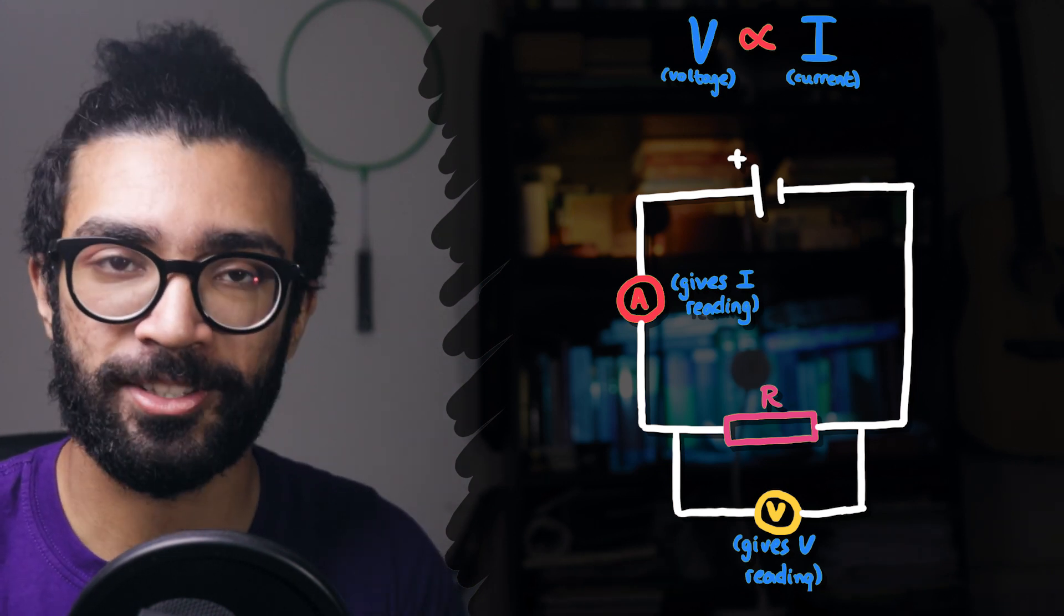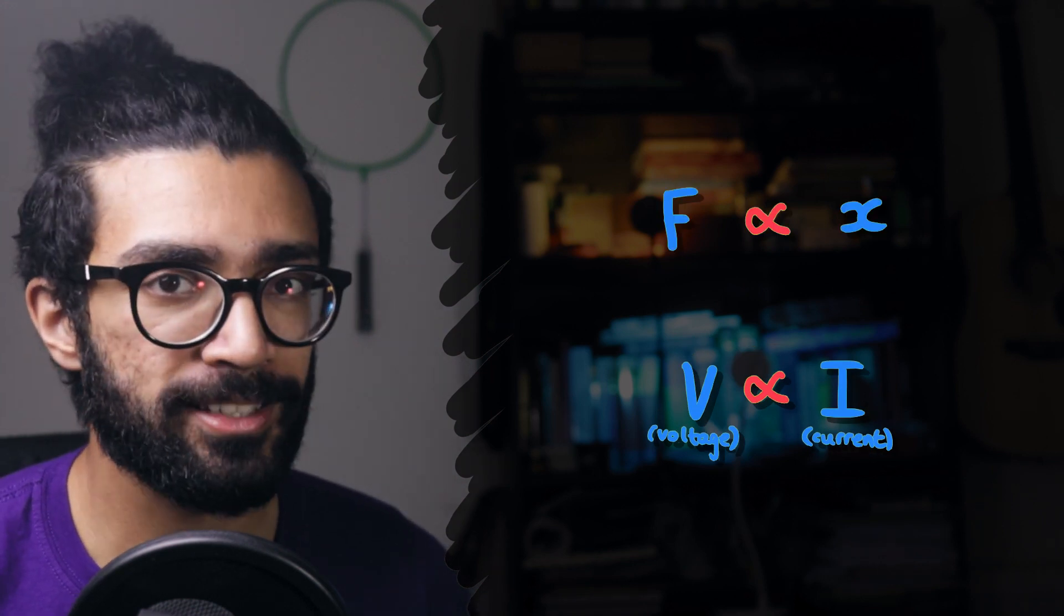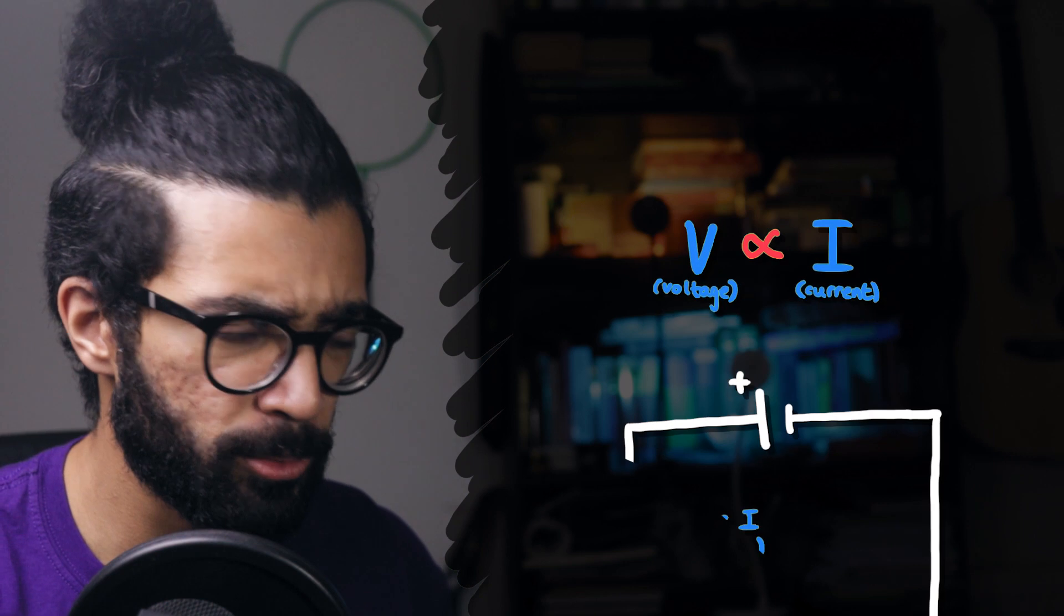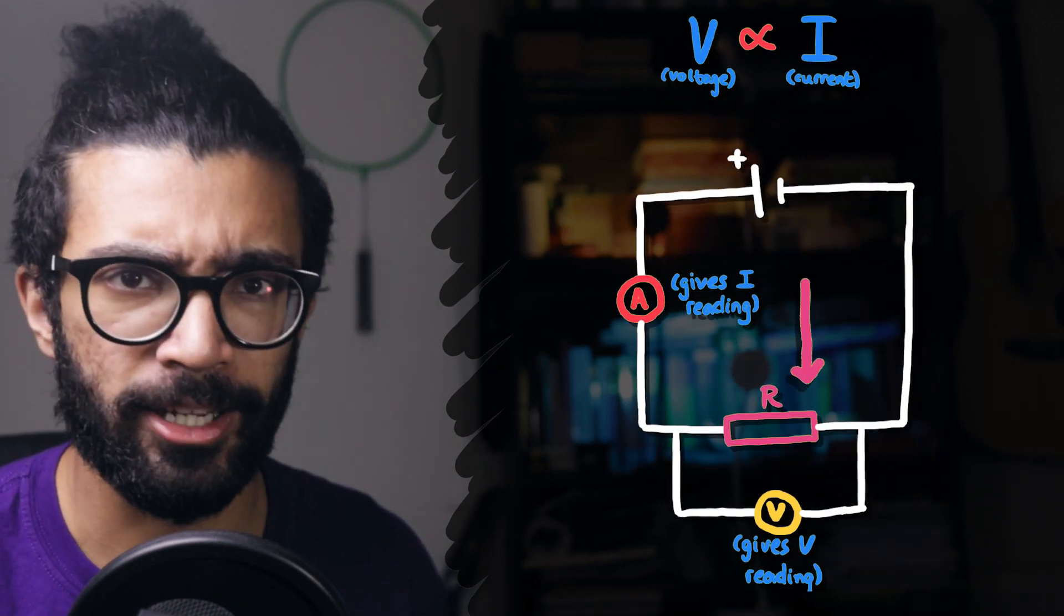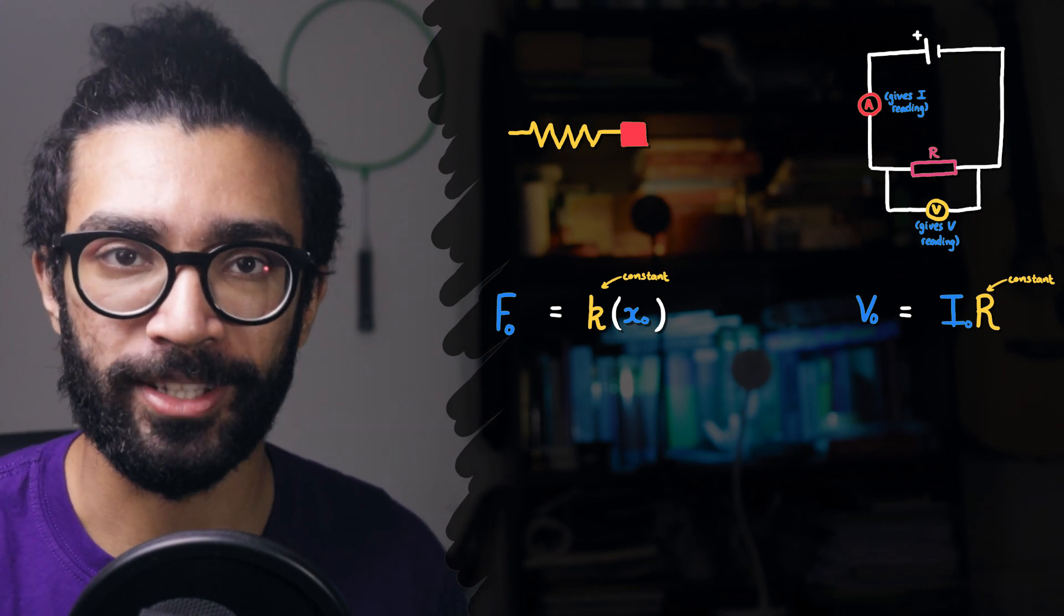In both cases, classical physics tells us that there's a direct proportionality relationship. F is proportional to X in the first case and V is proportional to I in the second case. Assuming we've got an actual resistor and not like a diode or something. But we're conducting this experiment in order to verify whether or not this is true.